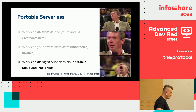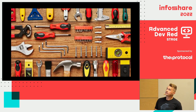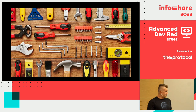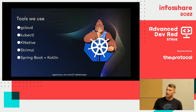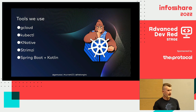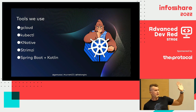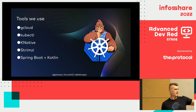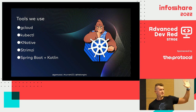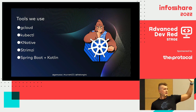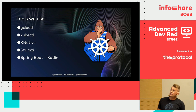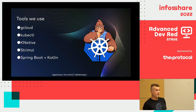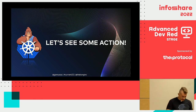One of the managed versions of KNative is Google Cloud Run, and Confluent Cloud is managed Kafka. We'll be using Google Cloud to provision a Kubernetes cluster. The kubectl pronunciation debate: how many of you say 'kubectl'? How many say 'kube-control'? It's a long discussion. We're going to be using KNative, Strimzi for Kafka, and Spring Boot with Kotlin for our business logic.